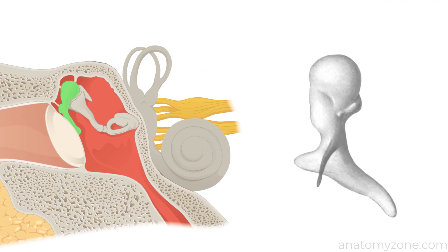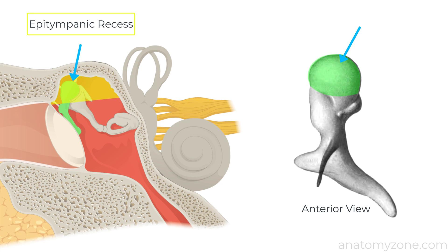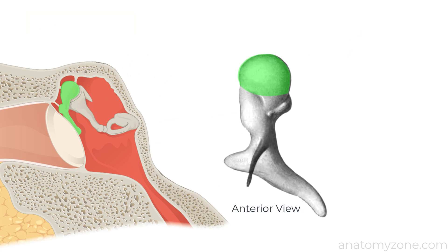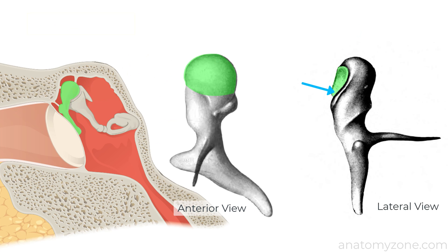The head of the malleus is this rounded part which lies in the epitympanic recess superiorly and articulates with the incus via its posterior surface. You can see this facet for articulation with the incus on the posterior surface of the malleolar head on this lateral view. Just below the head the malleus narrows to form the neck which lies against the flaccid part of the tympanic membrane. The chorda tympani crosses the medial aspect of the malleolar neck.